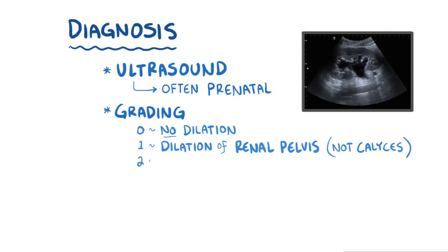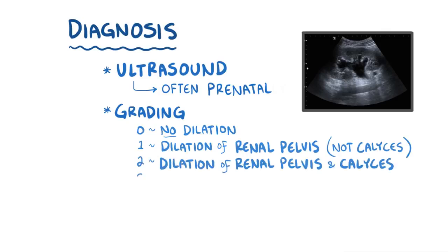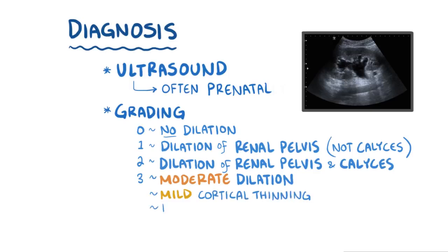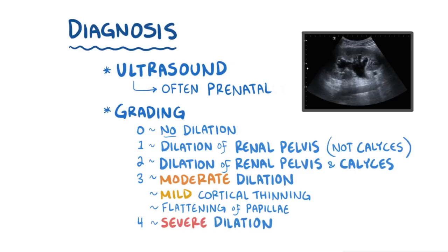Grade 2 is when there is dilation of the renal pelvis and the calyces. Grade 3 is when there is moderate dilation of the renal pelvis and calyces, in addition to mild cortical thinning and flattening of the papillae. And lastly, grade 4 is when there is severe renal dilation and cortical thinning.